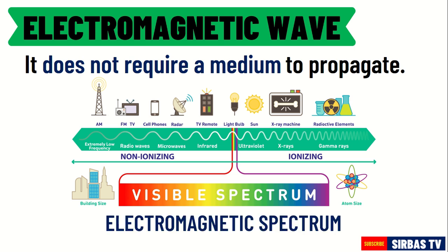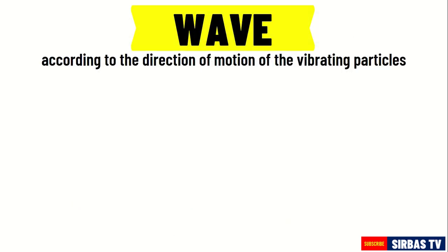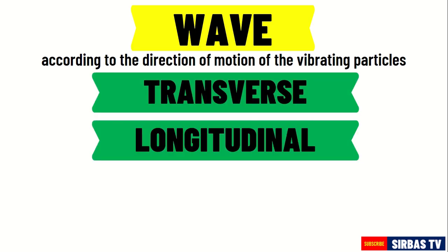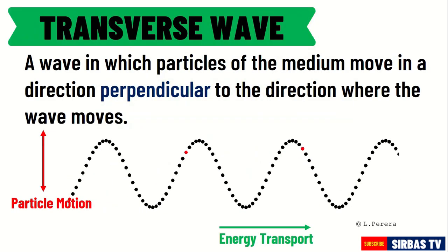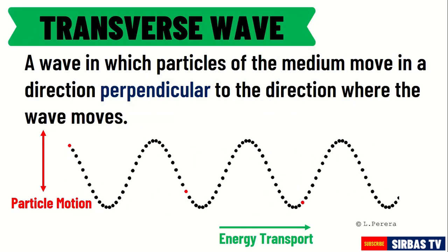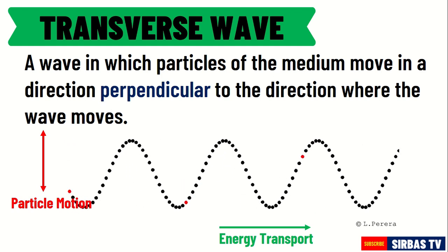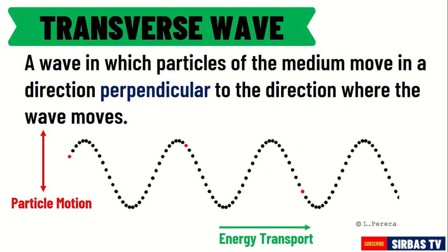You are going to study these waves in detail on your next grade level. Aside from the presence or absence of a medium, waves can also be classified according to the direction of motion of the vibrating particles with respect to the direction in which the waves travel. These are transverse waves, longitudinal waves, and surface waves. A transverse wave is a wave in which particles of the medium move in a direction perpendicular to the direction where the wave moves.